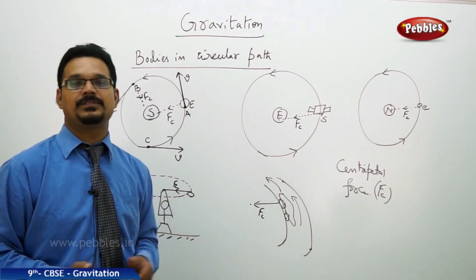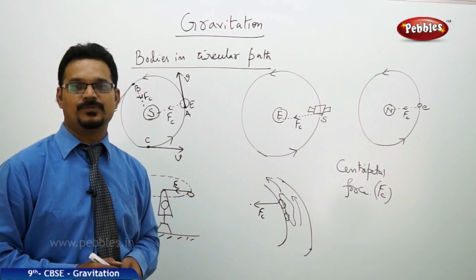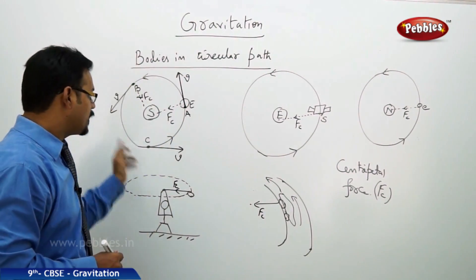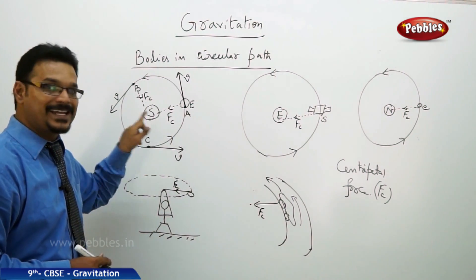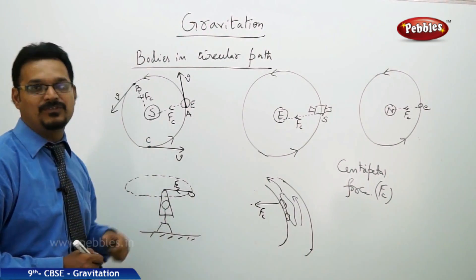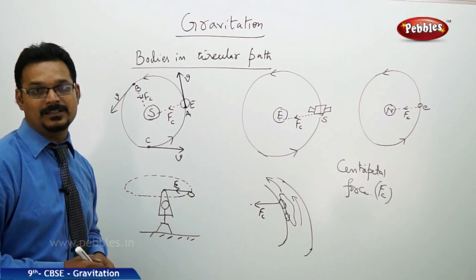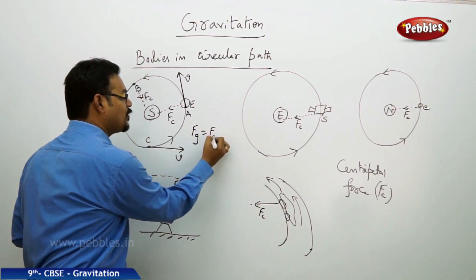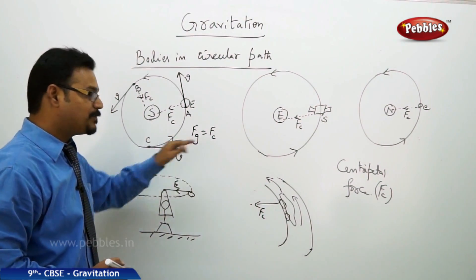In all these examples, a different force is acting like centripetal force. In the first example — Earth revolving around the Sun — the centripetal force is not its own origin. Here, the gravitational force by the Sun, or the attraction force by the Sun, is acting like centripetal force. If we write gravitational force as Fg, then here Fg equals FC. So the gravitational force of the Sun is acting like centripetal force.